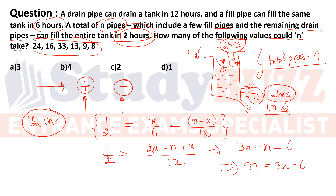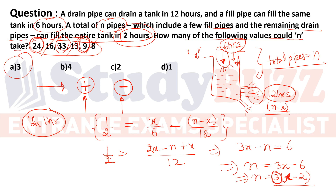Since n = 3(x − 2), n must always be a multiple of 3. Values of n from the given set that are not multiples of 3 are rejected — 3 values are rejected. The valid values n can take are 24, 33, and 9. This question reinforces that drain pipes always use a negative sign in effective fill-rate equations.